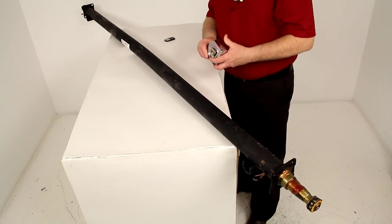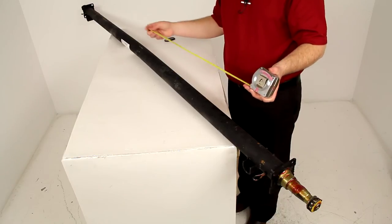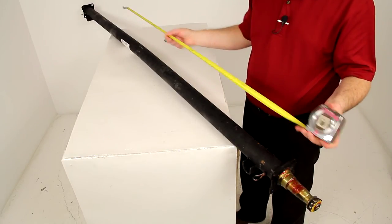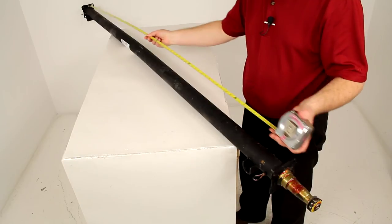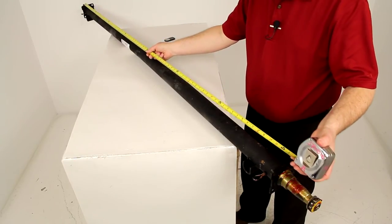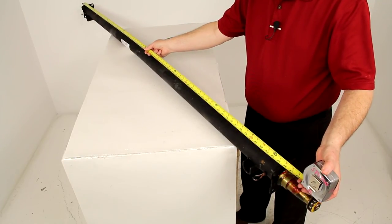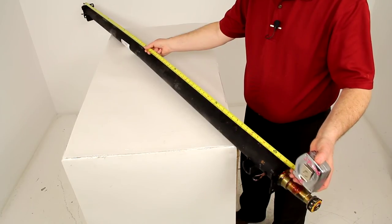So just to give you an idea on this axle, we'll first do the hub face to hub face measurement. Now I don't have the hubs on here, but I'm going to give you a rough idea of where they will be. So the hub face to hub face length for this axle will be 89 inches.